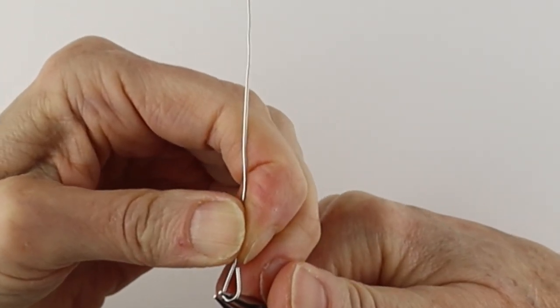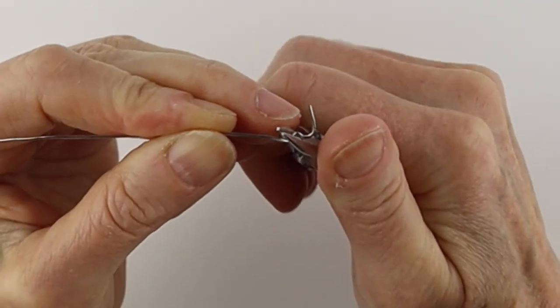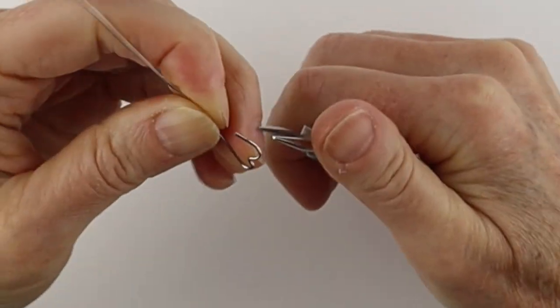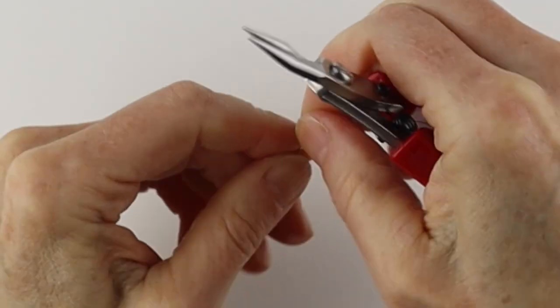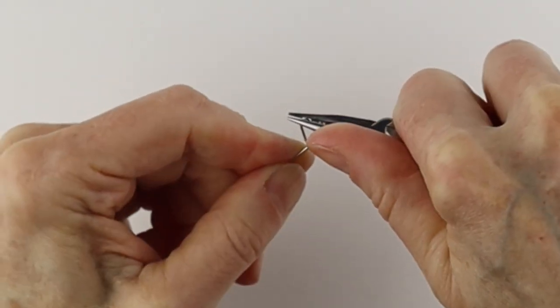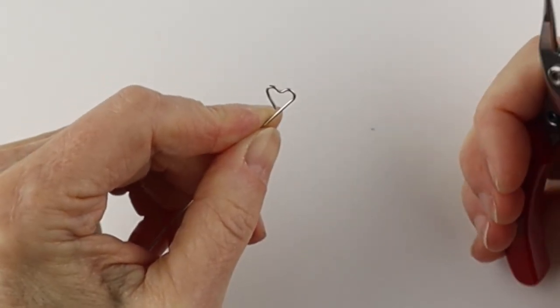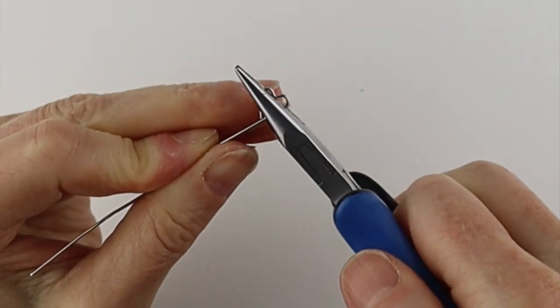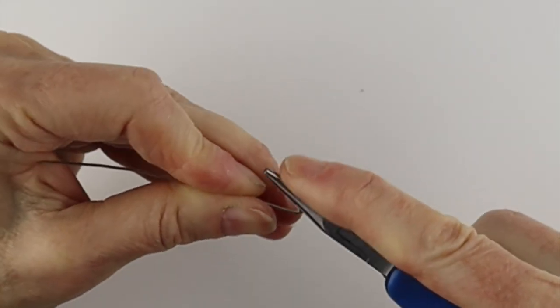And then I'm going to bend this one up and then bring this one down like this. Just turn it around and make sure it's pretty even. And then I'm going to hold it with the flat pliers and bend that straight across.